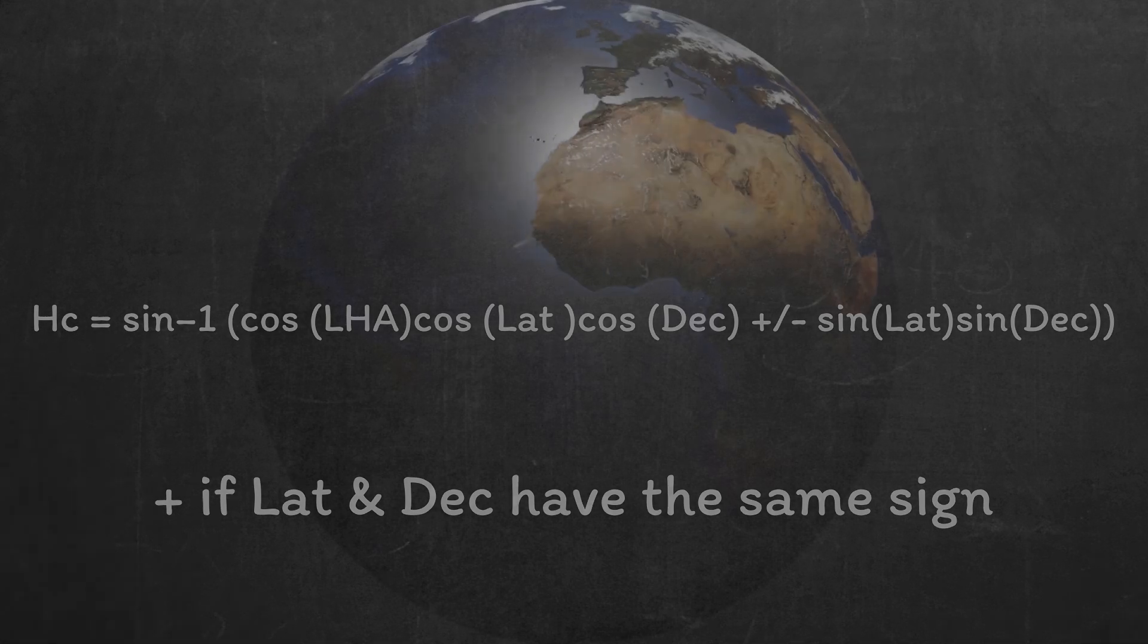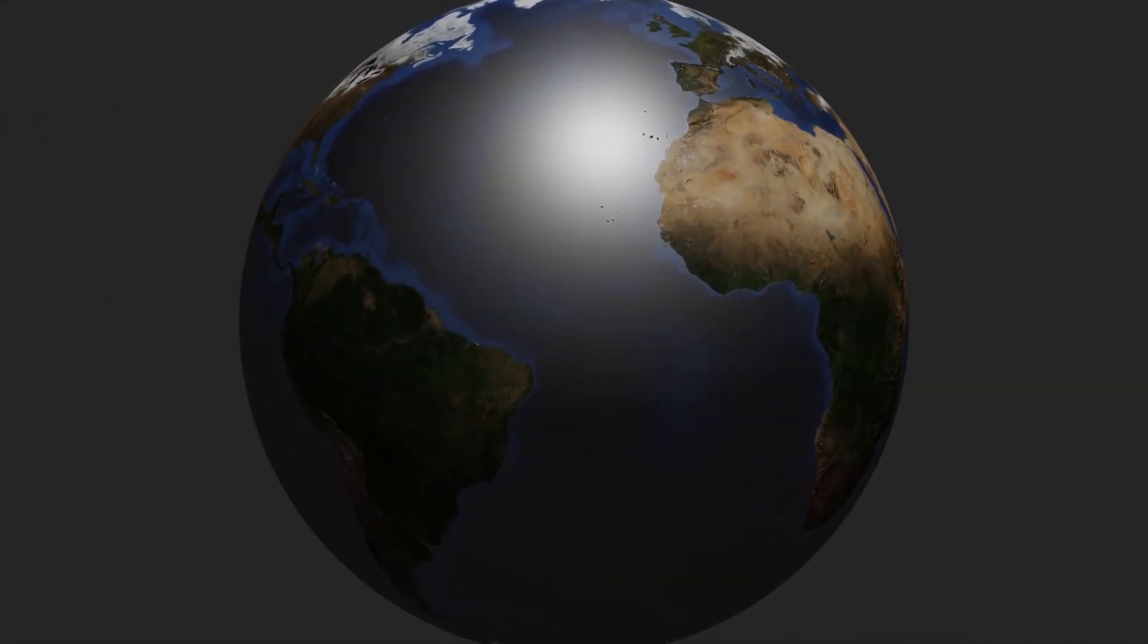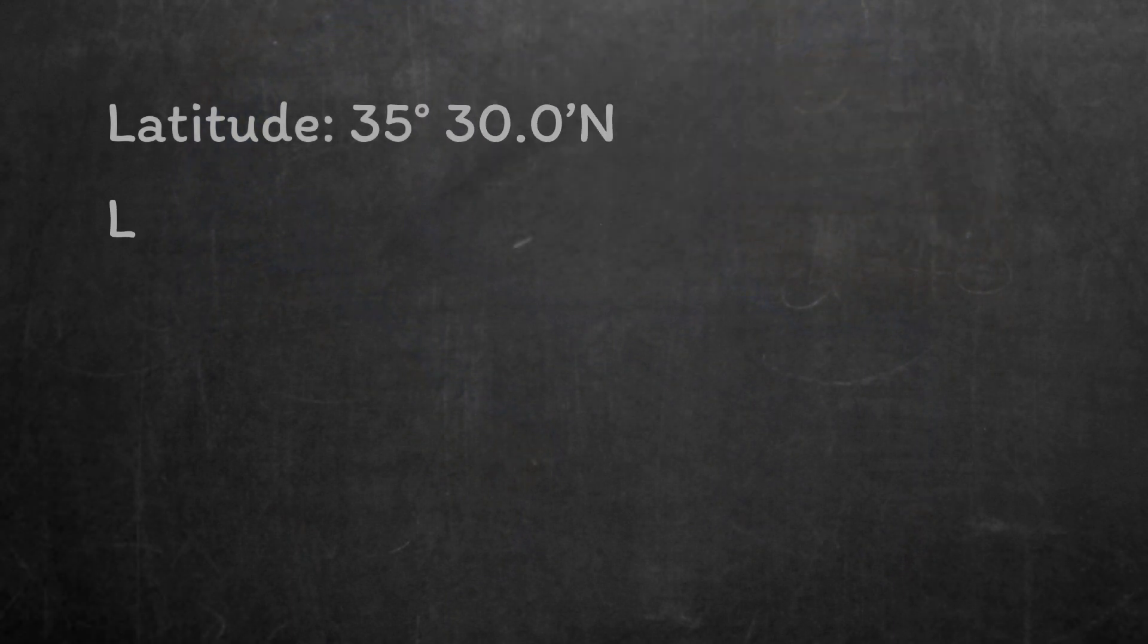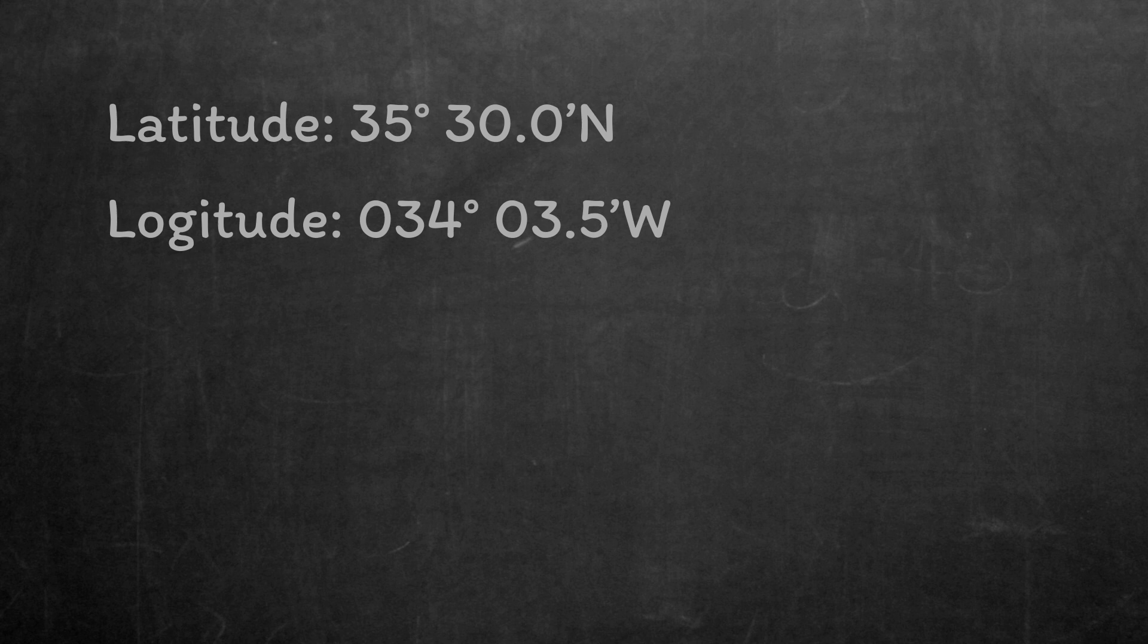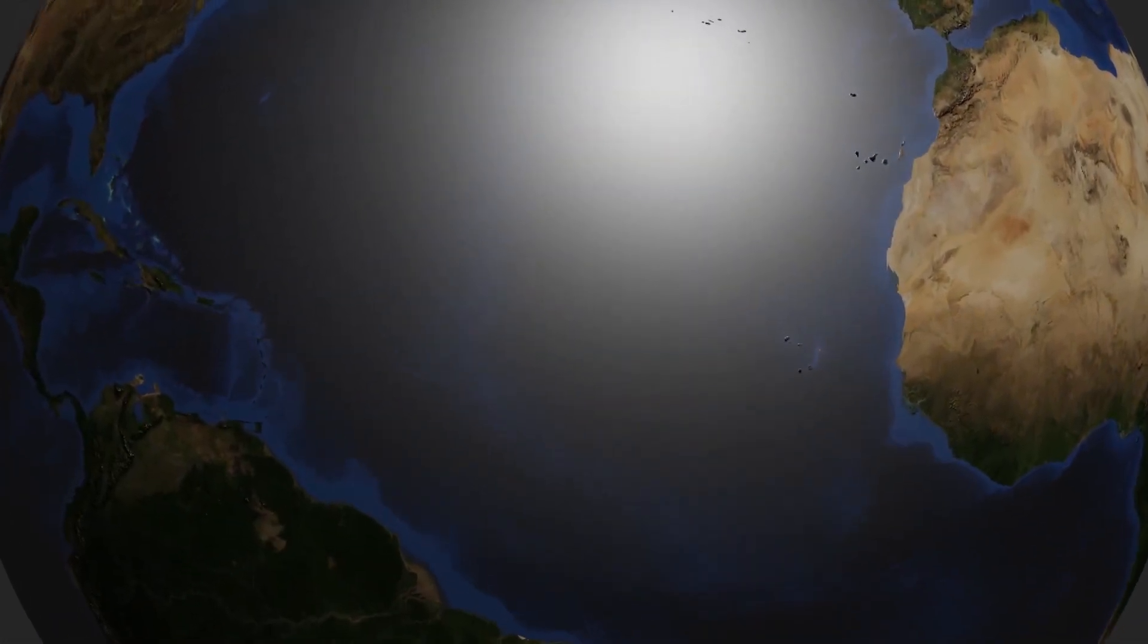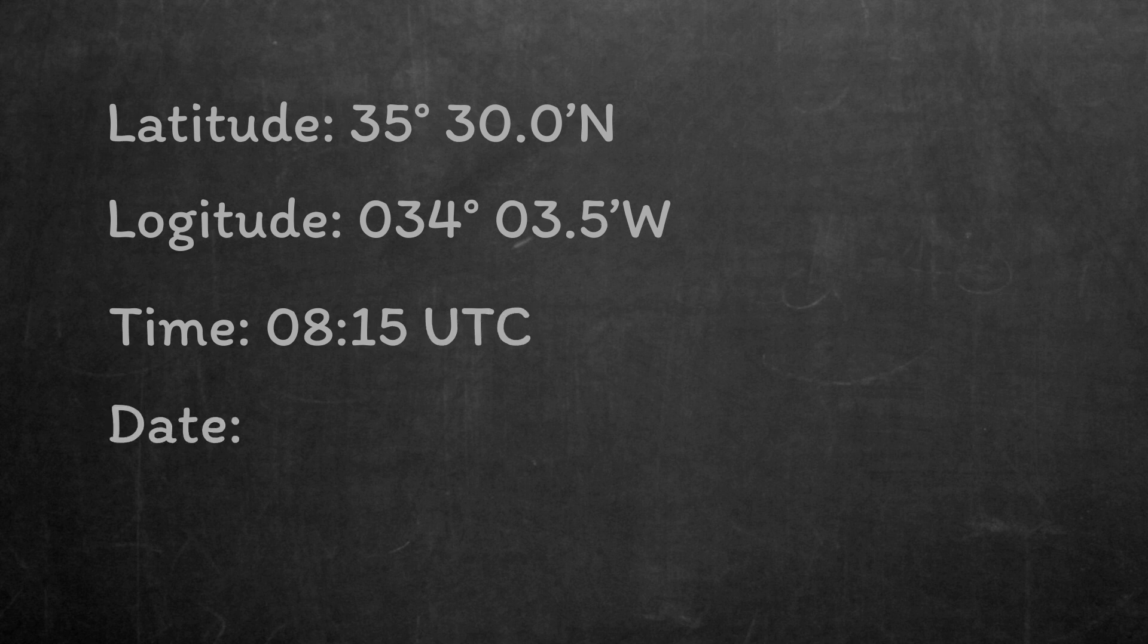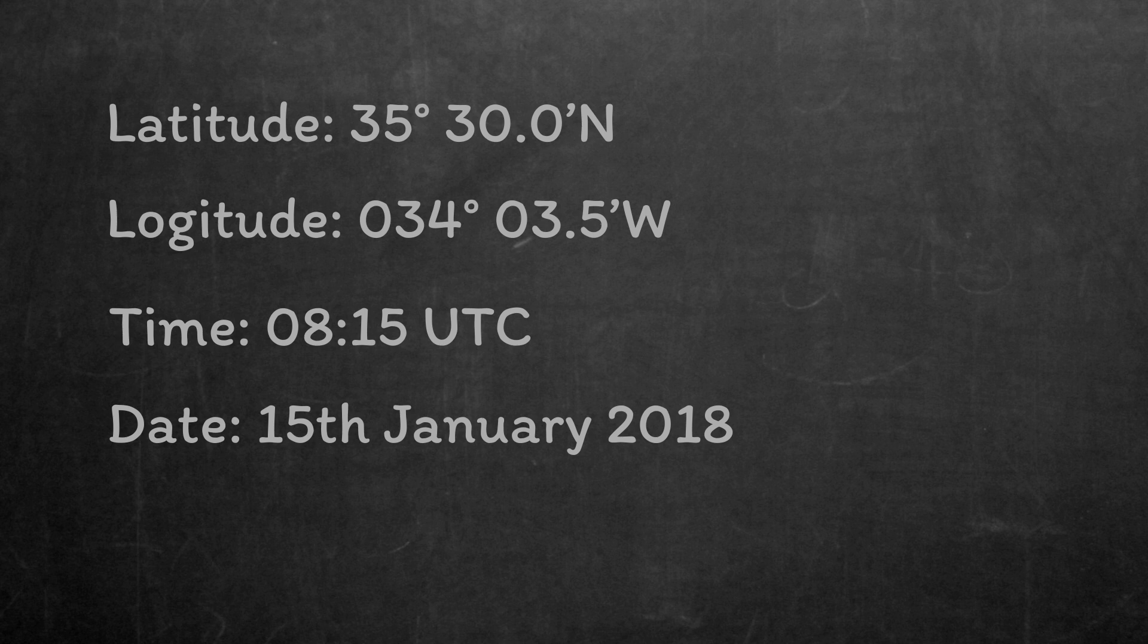So let's take a look at an example. Our estimated position is 35 degrees, 30.0 minutes north, 034 degrees, 03.5 minutes west, which places us somewhere in the middle of the North Atlantic. The time we're going to say is 8:15 UTC on the 15th of January 2018. I'm going to use UTC instead of local time, as that's just an additional conversion that we don't need for the purpose of this demonstration.